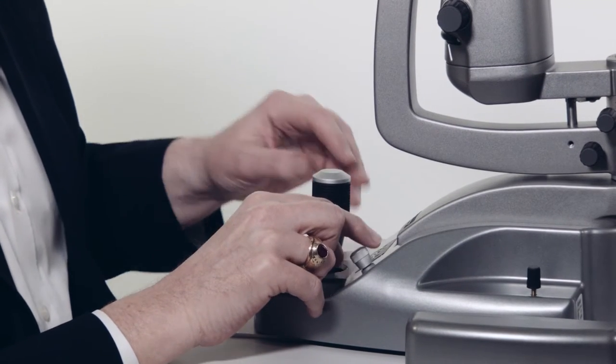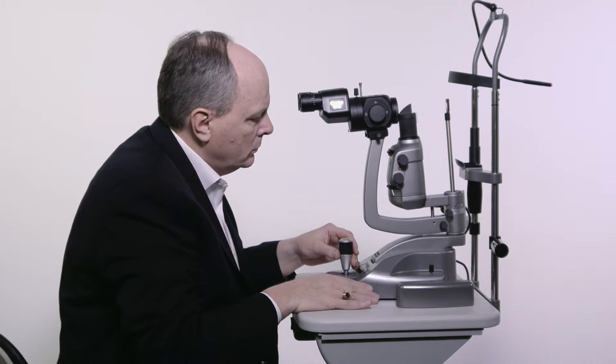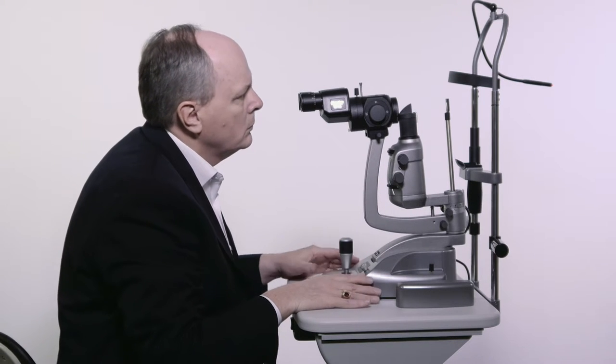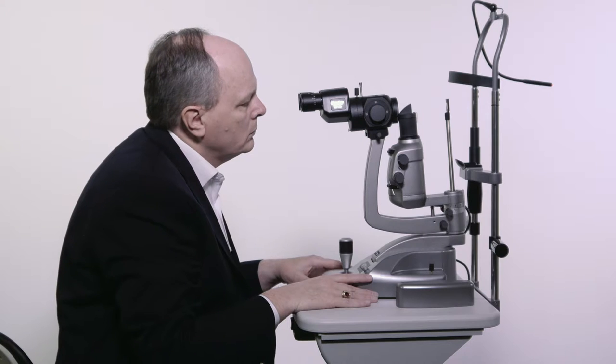Rotate the joystick until the light beam is at eye level. Move the slit lamp towards the patient until the slit beam is focused on the cornea.